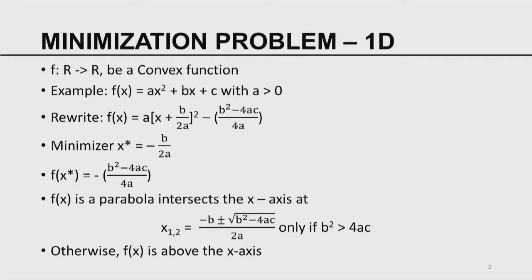With that as background, I would like to state the minimization problem in one dimension. Let f be a convex function from R to R — a scalar-valued function of a scalar. An example of such an f is ax² + bx + c with a > 0. We can rewrite this as a(x + b/2a)² − (b² − 4ac)/4a by completing the square.